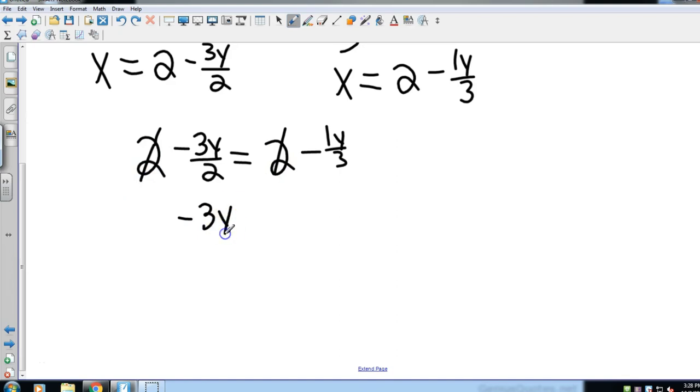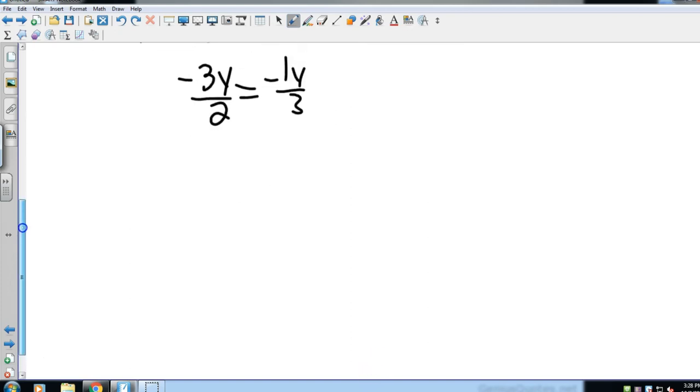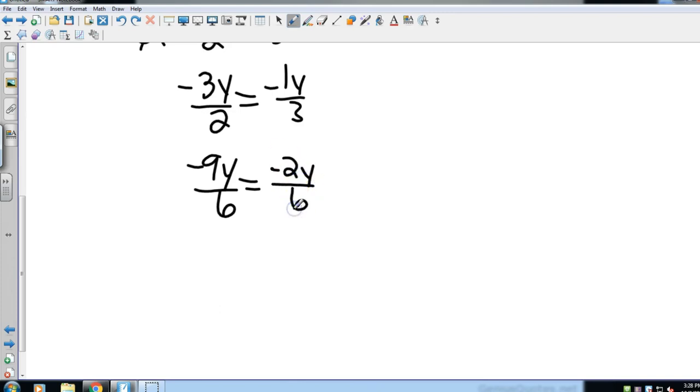And I have negative 3y over 2 equals negative 1y over 3. So we do have to get the y's together. You're going to see a little magic here in just a minute. Let's go ahead and give them common denominators. So I'm going to have a common denominator of 6. So on the left side, I multiply top and bottom by 3, so that's negative 9y over 6. And on the other side, I multiply top and bottom by 2, so that's negative 2y over 6. And so the smaller one is going to be the negative 9y, so I'm going to add 9y over 6.